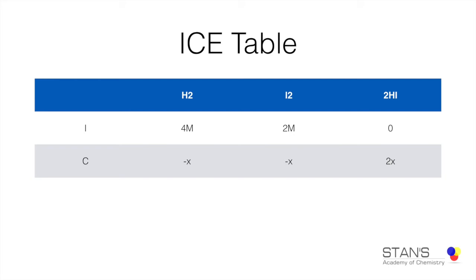The equilibrium concentration refers to the number of moles of unreacted hydrogen remaining at equilibrium. To find it, we subtract the moles that have reacted: initial concentration minus change in concentration, which is 4 M minus X. Similarly, the equilibrium concentration for iodine is 2 minus X, and it produces 2X moles of hydrogen iodide.